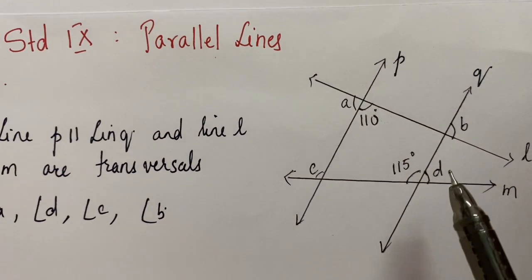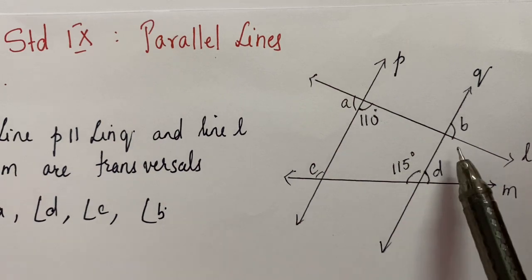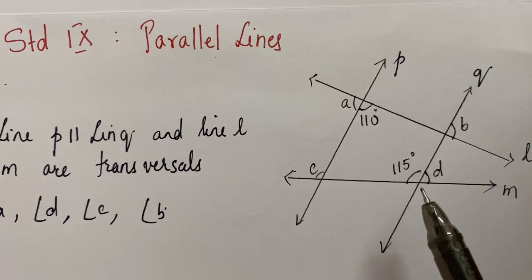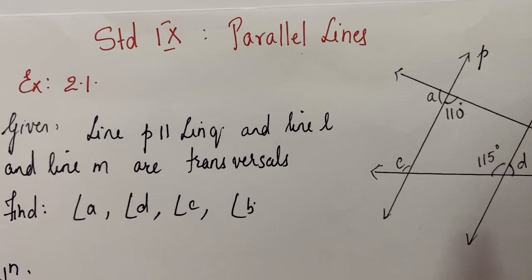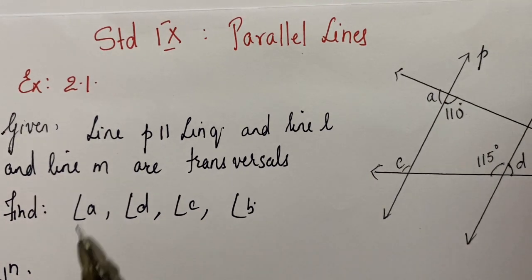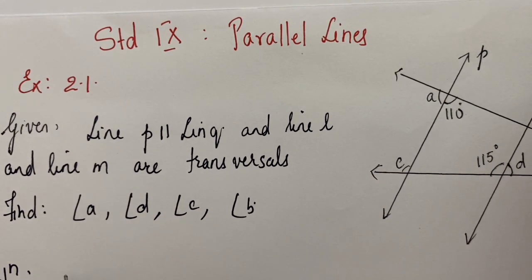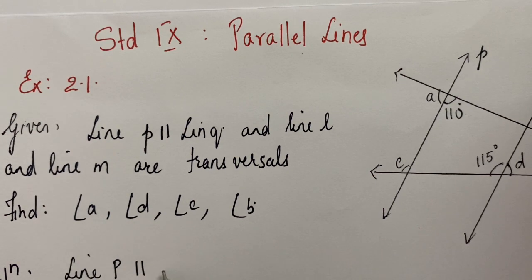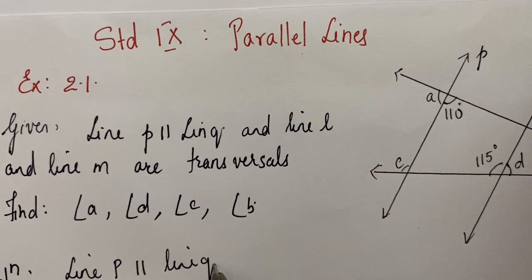Since we have two transversals here, it is essential for you to state which transversal you are using in this sum. So, line P is parallel to line Q.